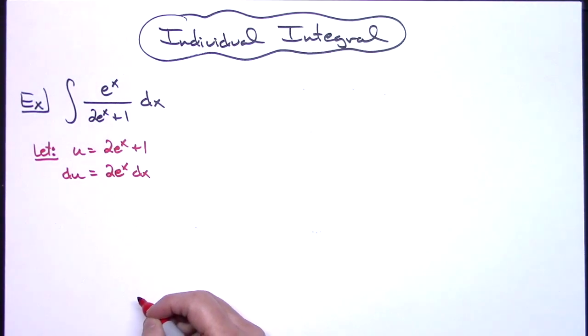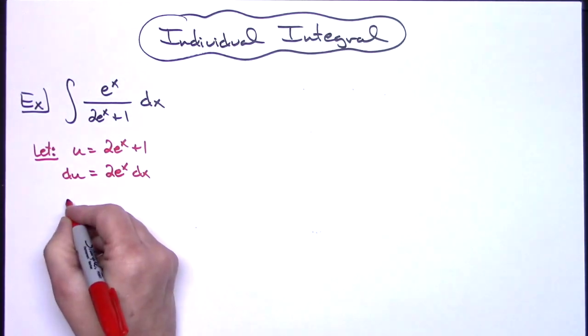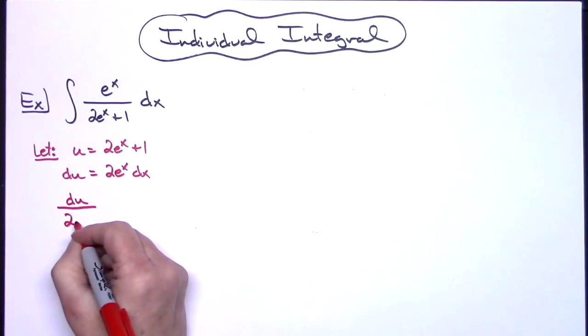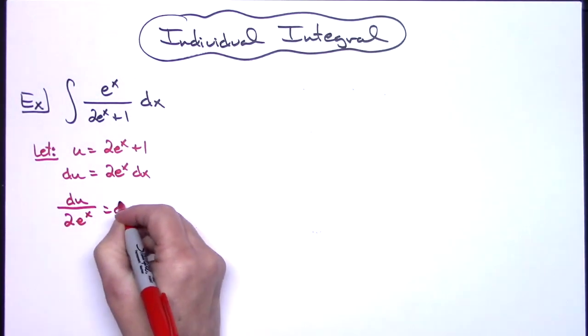I'm going to go ahead and solve all the way down for that dx. So I'll have a du over a 2e to the x is equal to that dx.